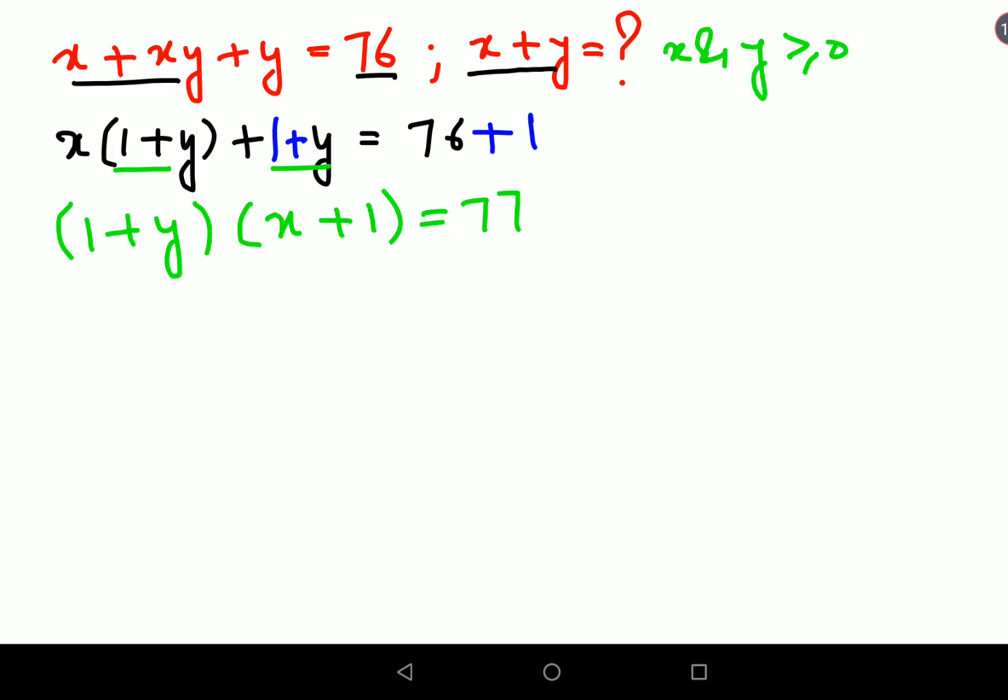Now we have 77 here. Let's write down the factors of 77. We get 1 and 77, or we get 11 and 7. Now if I take 1 and 77, let's say (1 plus y) equals 1, then (x plus 1) equals 77.